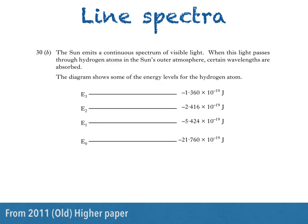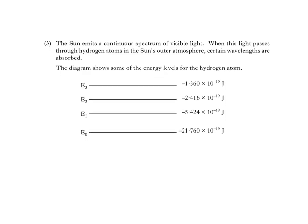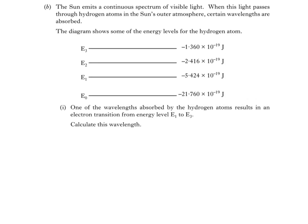The sun emits a continuous spectrum of visible light. When this light passes through hydrogen atoms in the sun's outer atmosphere, certain wavelengths are absorbed. The diagram shows some of the energy levels for the hydrogen atom. Part 1 then says, one of the wavelengths absorbed by the hydrogen atoms results in an electron transition from energy level E1 to E3. Calculate this wavelength.